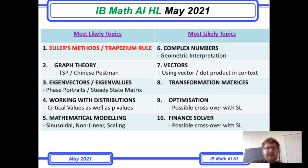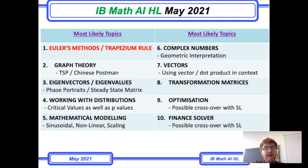Number four is working with distributions. This is slightly different compared to standard level — you can't just rely on your p-values; you need to know how to work out critical values. For example, with Z-testing, knowing how to use inverse norm is going to be very important for those harder questions.